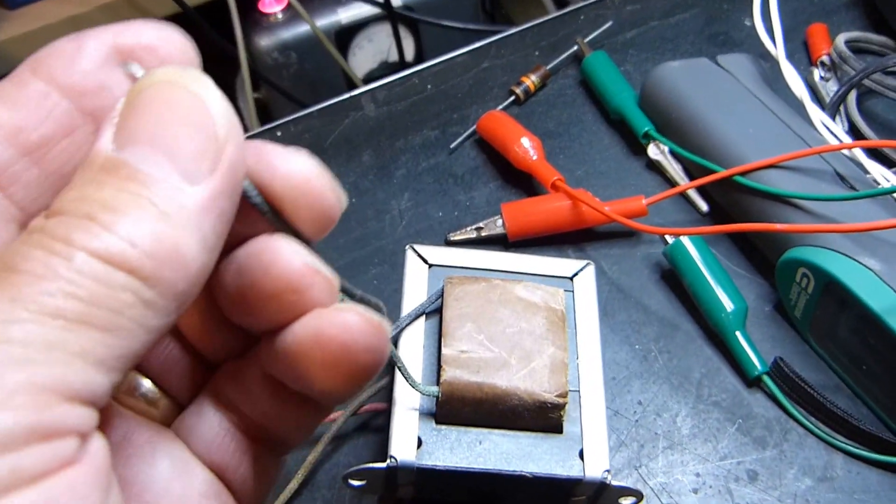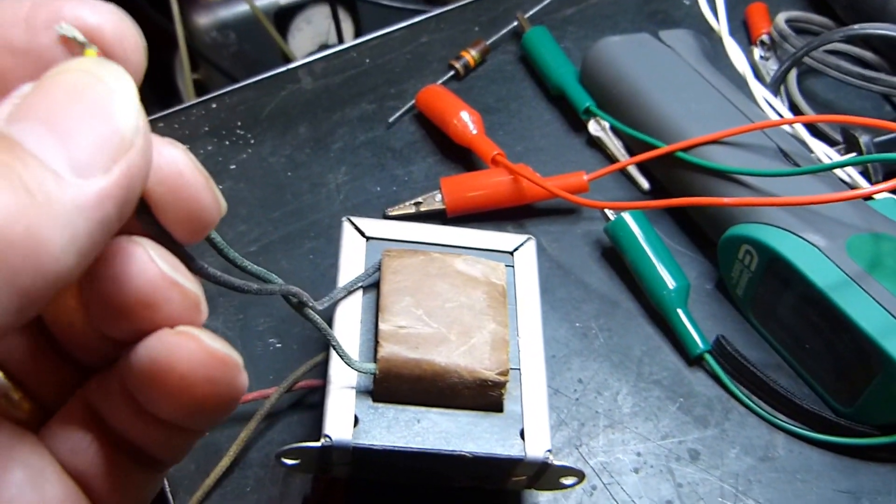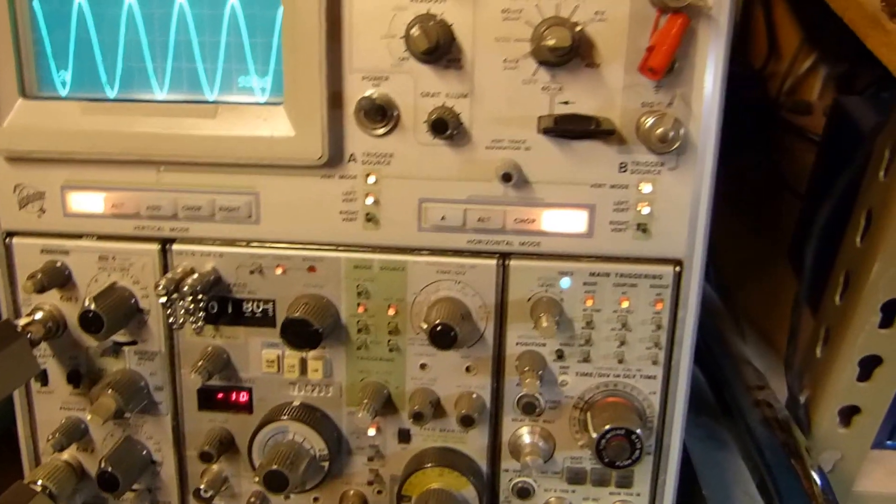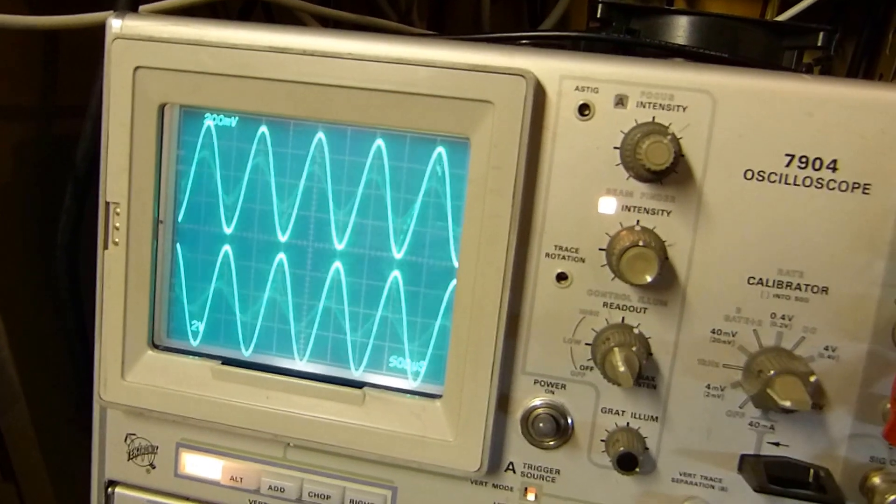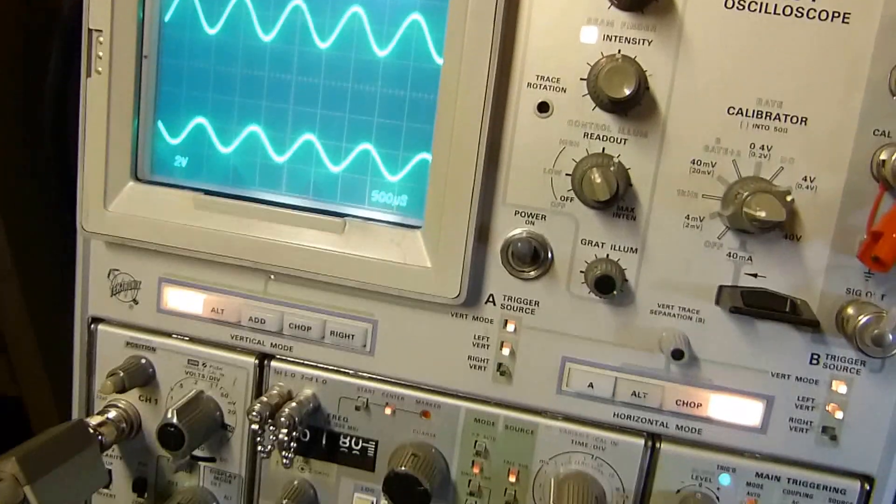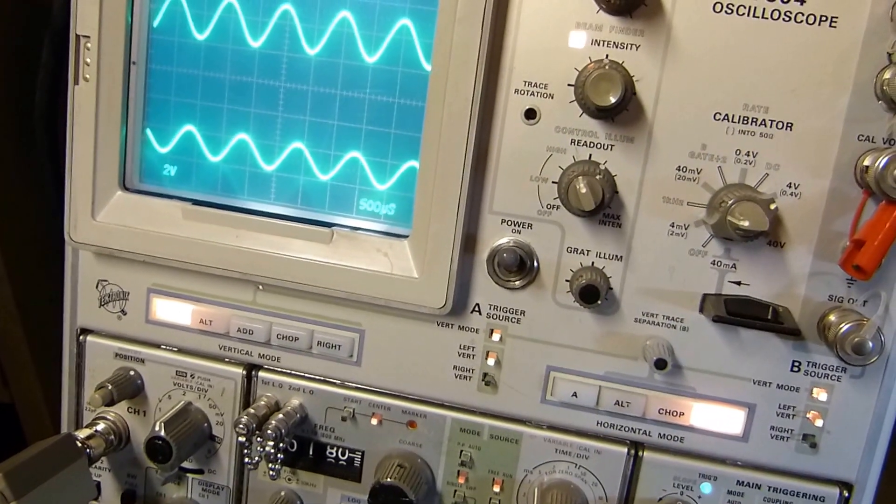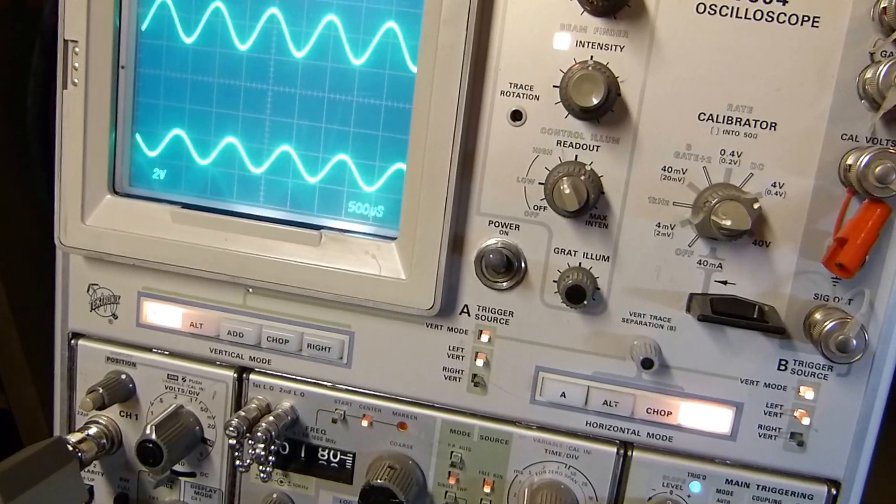What happens if we short the secondary? I want to touch these together. Let's see - it just drops it way down in amplitude by loading it heavily, but the signals are still the same amount out of phase.